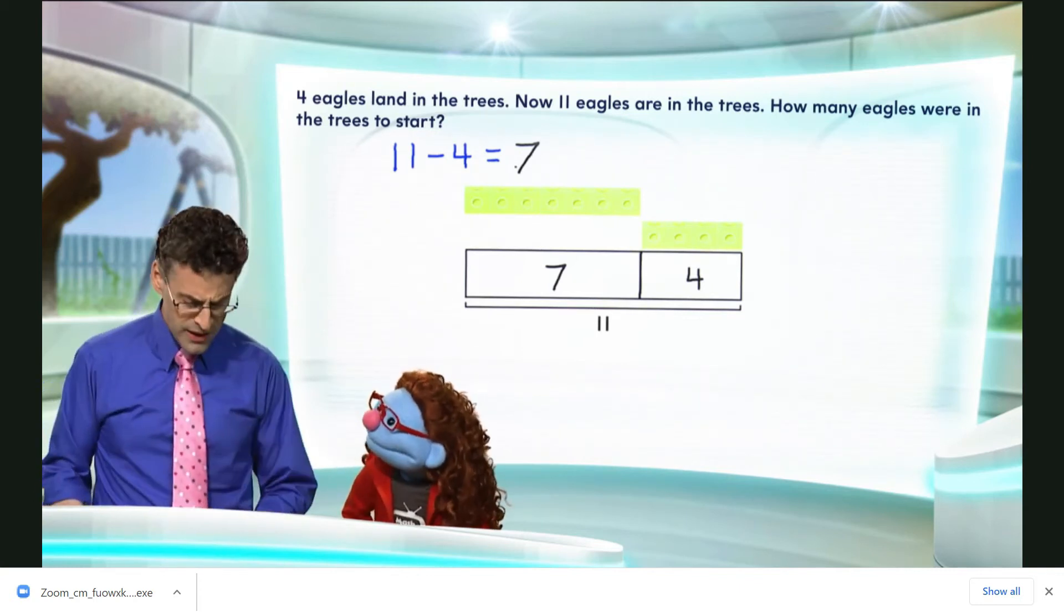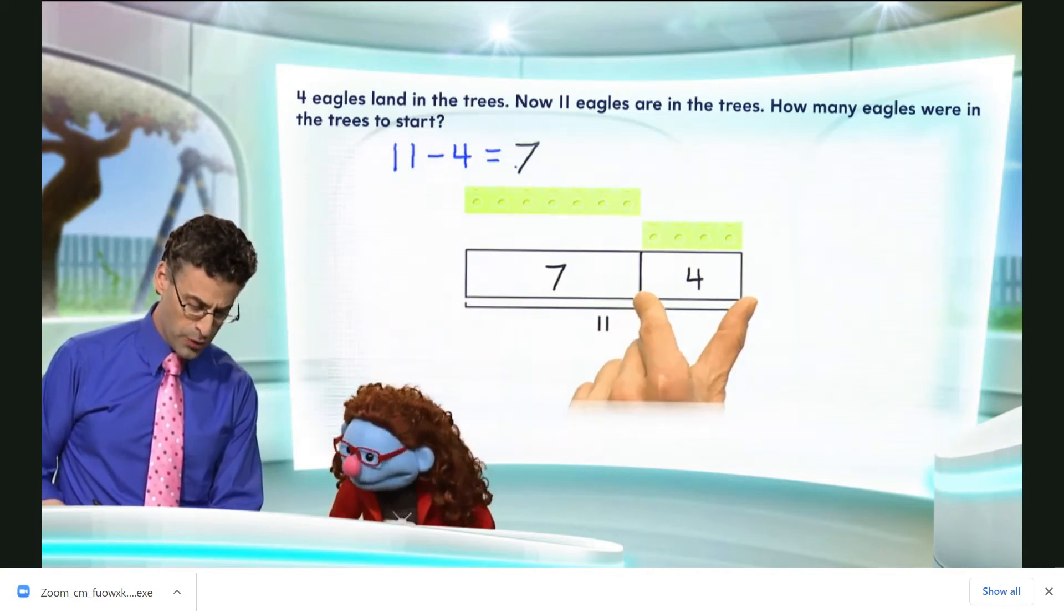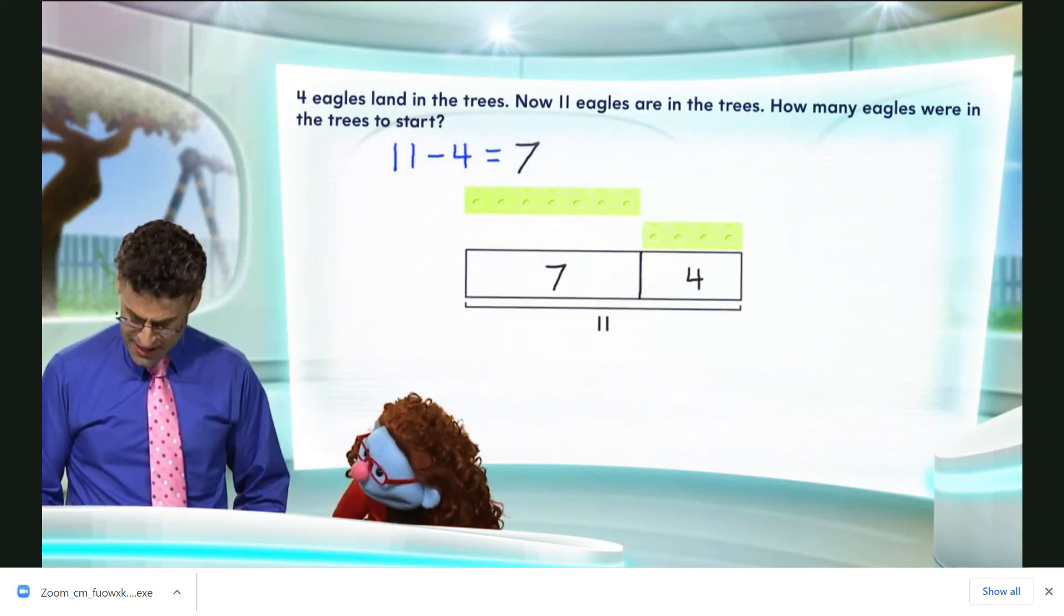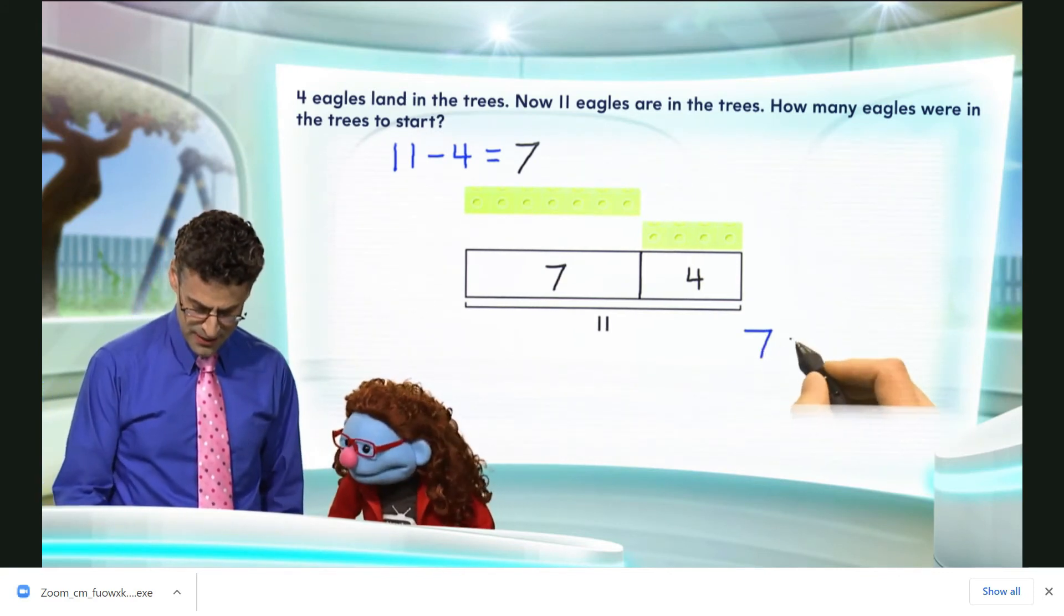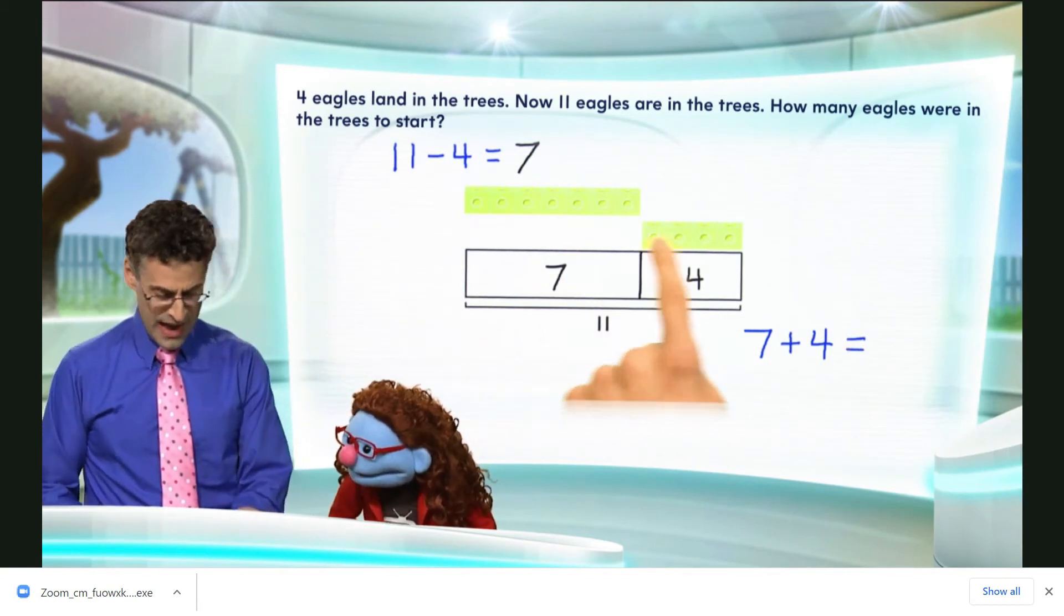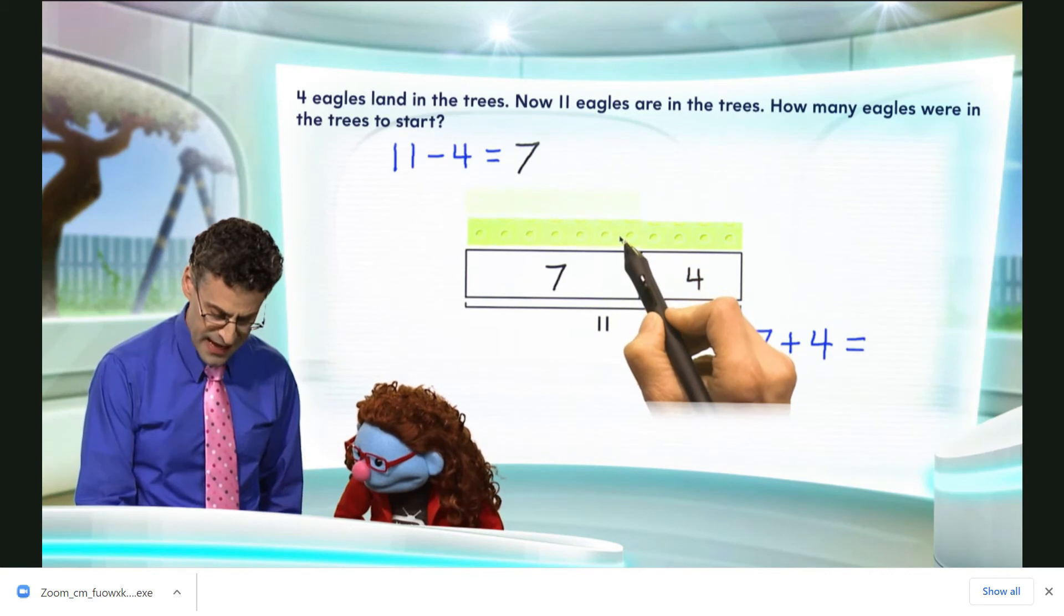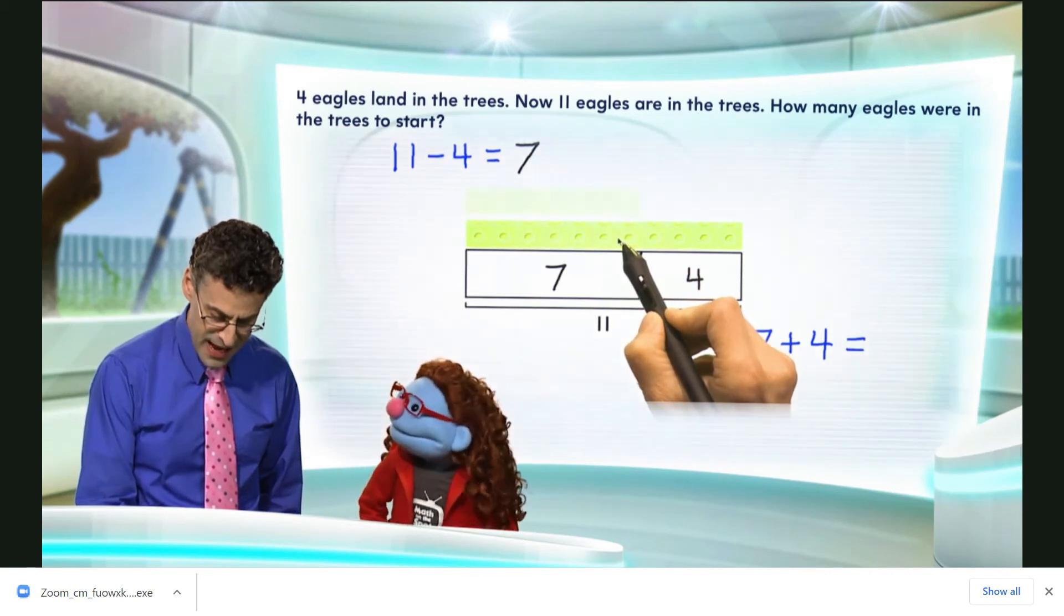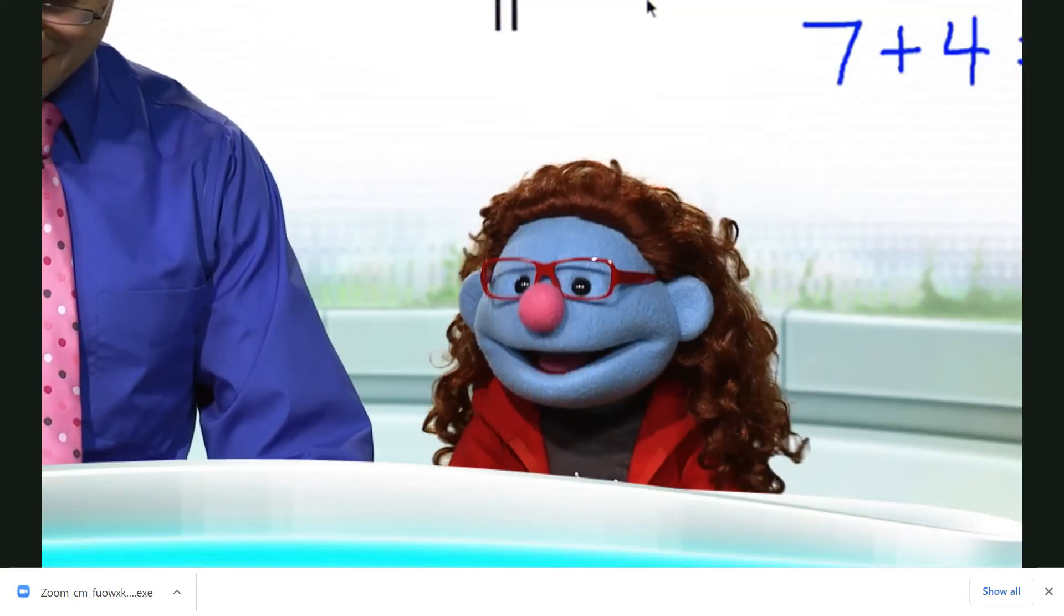How? Well, if there were seven at the beginning, and then four joined, we can actually write an addition sentence, we can say seven plus four, and that's going to equal how much we have all together. And we just already figured that out, because how many did we have at the very end? And we saw the total number is eleven!